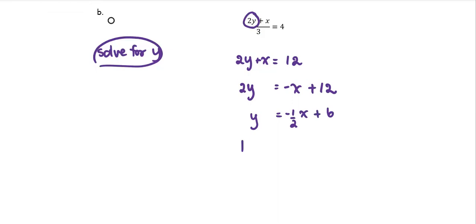Replace y with the notation f of x to get the function f of x equals negative 1 half x plus 6, which is the equation of the line y equals mx plus b. The domain of the line is the set of all real numbers.